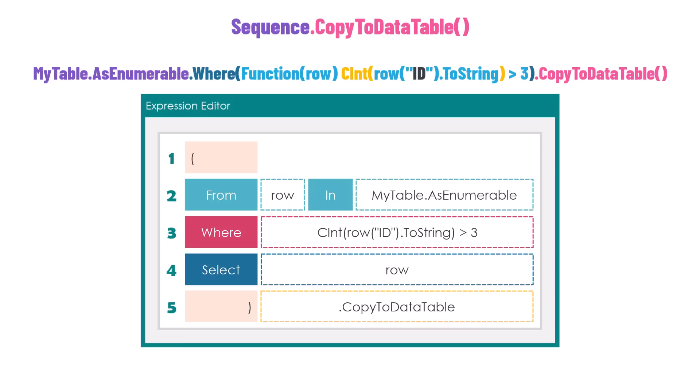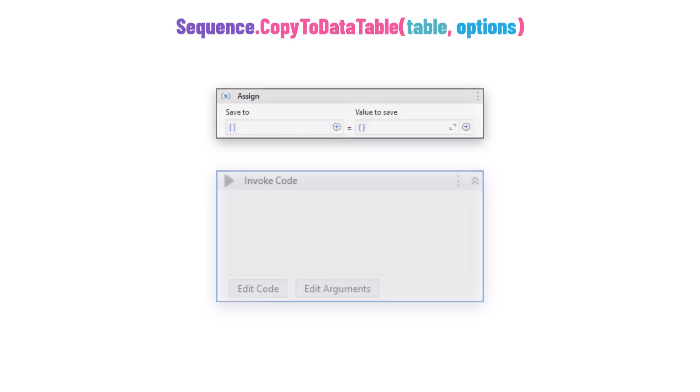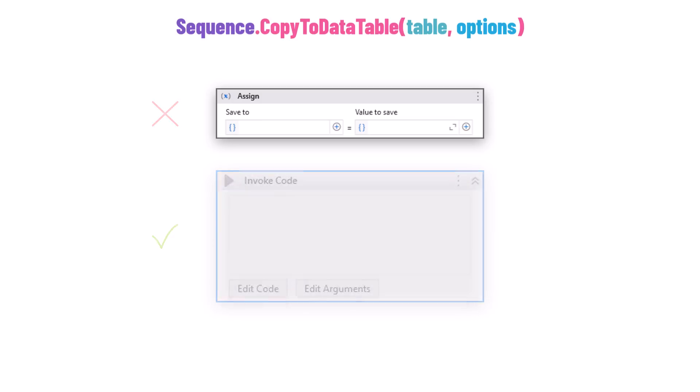That's all about the first overload. We have just covered the first and most commonly used overload of the CopyToDataTable method. Now let's explore the second overload. Remember, this one can't be used in an Assign activity — only within an InvokeCode activity. In an Assign activity, we typically assign a value to a variable, with a variable on the left side waiting to receive a value provided on the right side.